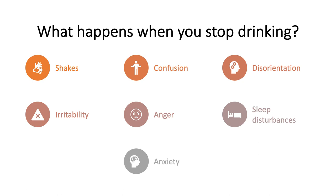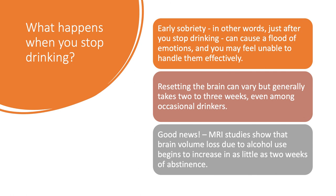After your brain has been acclimated to a regular supply of alcohol, it resets itself to accommodate regular alcohol intake. When you stop drinking, your brain again resets and you may experience alcohol withdrawal, including the shakes, confusion, anger, disorientation, and irritability. Even low to moderate drinkers may experience sleep disturbance or anxiety. This brain reset can take two to three weeks and may be accompanied by difficult emotional changes. During this time of beginning abstinence, the brain volume lost due to alcohol use begins to increase as demonstrated in MRI studies of those in recovery.